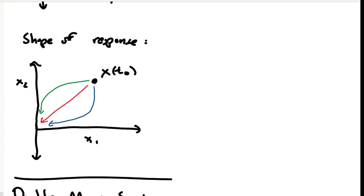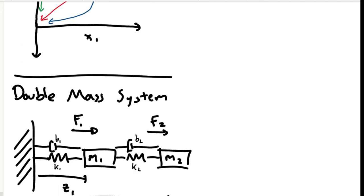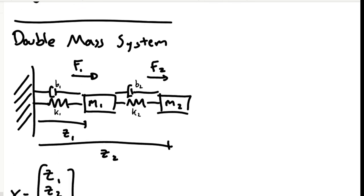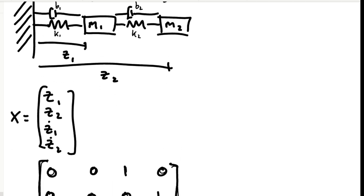For example, consider a double mass spring damper system, which we'll use as an example throughout this video. There are two masses attached to each other by springs and dampers with two independent force inputs. The state is x equals z1, z2, z1 dot, and z2 dot.